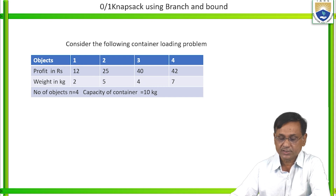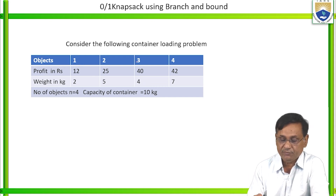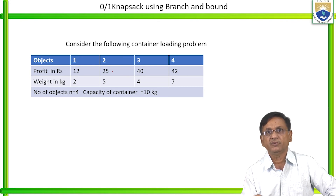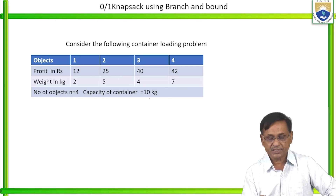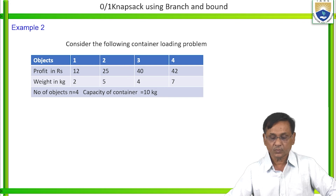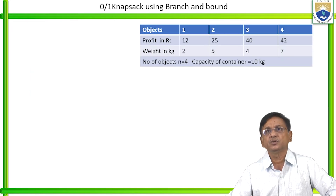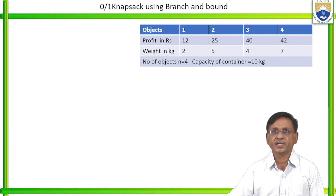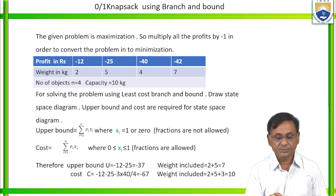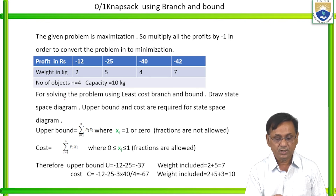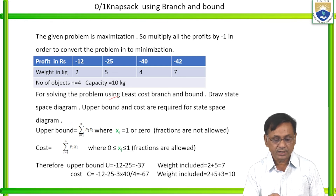Now consider another problem — a container loading problem with 4 objects. Profits: 12, 25, 40, 42 for objects 1 through 4. Weights: 2 kg, 5 kg, 4 kg, 7 kg. Number of objects n=4, capacity of the container is 10 kg. To solve using least cost branch and bound, draw the state space diagram. Upper bound and cost are required. Convert to minimization: profits become -12, -25, -40, -42.